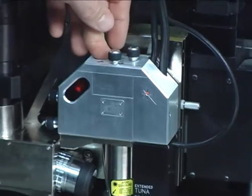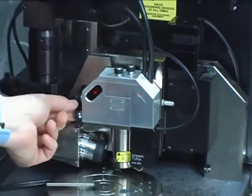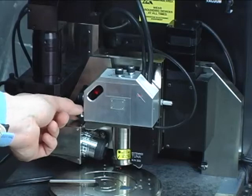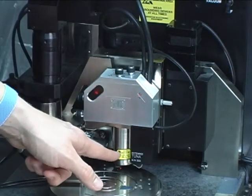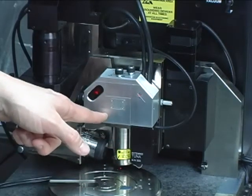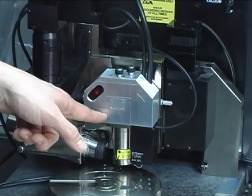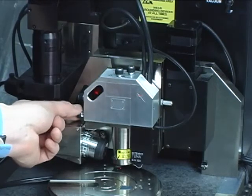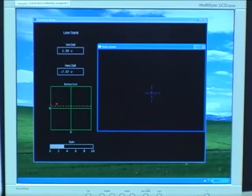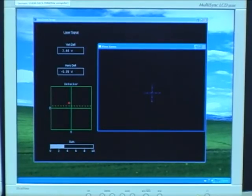We'll now adjust the reflection of the laser beam off the back of the cantilever so that it lines up with the detector. And we do that by adjusting these knobs on the left and observing the change in the signal from the detector on our screen.